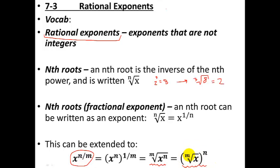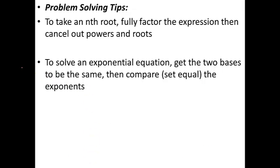Taking the root first is probably better because you'll get a small number and can then raise it to the power easily. If you raise to the power first, you get a very large number and then need to take the root of it, which is harder. So mathematically speaking, the numerator of the exponent is your power, and the denominator of the exponent is your root. Problem-solving tip: when taking roots, fully factor the expression inside and then cancel out roots and powers — examples will make this clearer. To solve an exponential equation, get the two bases to be the same and then compare the exponents.